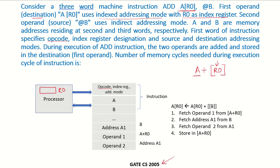The second operand, which is the source operand in ADD @B, uses indirect addressing mode. It says that whatever value is contained in B, that will be the memory address to go to, and the contents of that memory address will give us the final location of the operand. So A and B are memory addresses residing in the second and third words respectively.